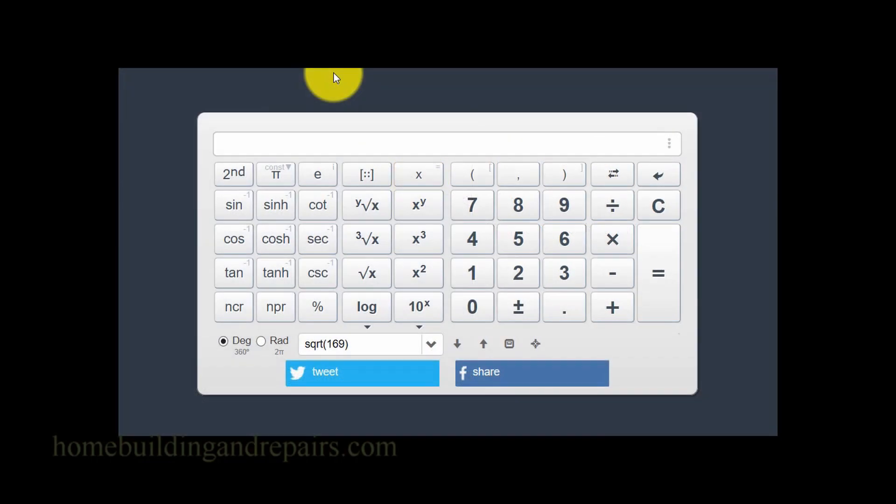Here is a calculator I found on the internet. You might have one at home, you might have one on your computer that you use. And most of us know how to multiply numbers together to find the square. If I multiply 5 times 5, then that's going to be 25. So that's not difficult to do. Clear that. 12 times 12 equals 144.